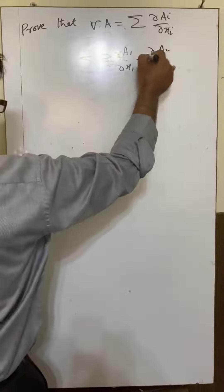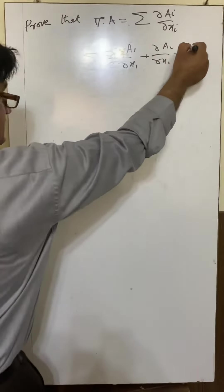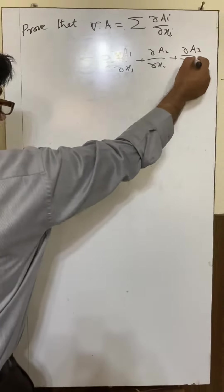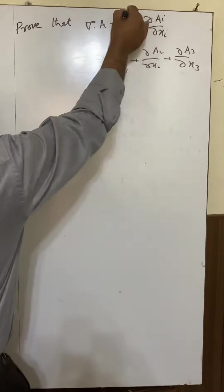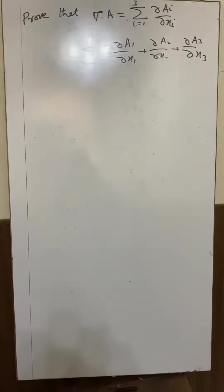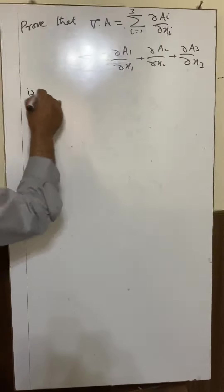plus partial A_2 over partial x_2 plus partial A_3 over partial x_3, where i varies from 1 to 3 for a three-dimensional system, is invariant